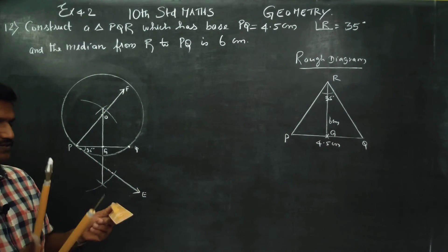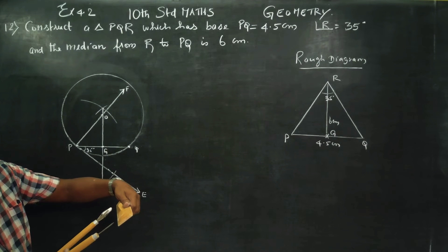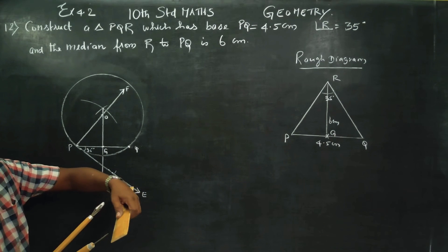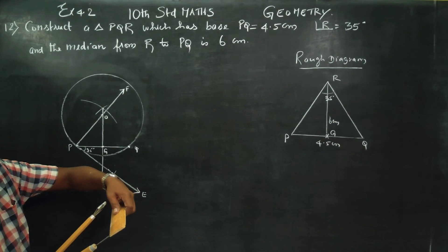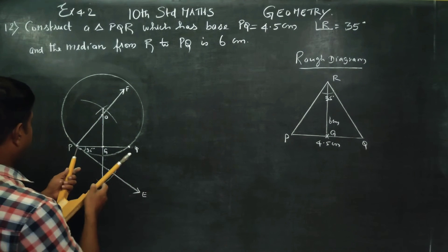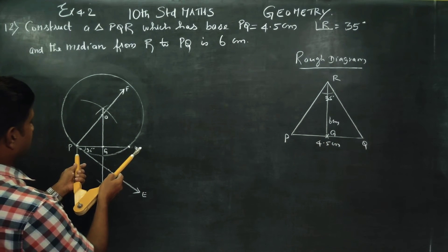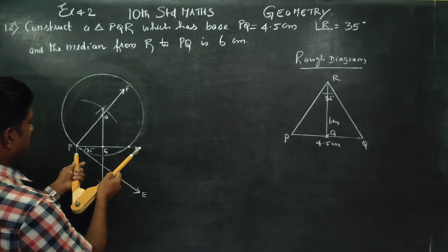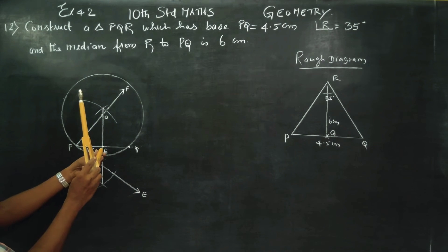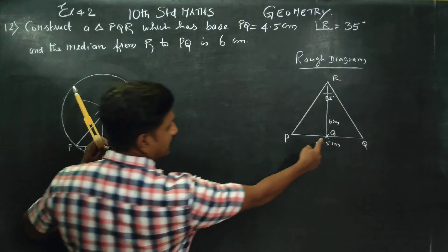Take 6 cm in your scale — measure exactly 6 cm. You have to draw an arc of 6 cm. This is my PQ of 4.5 cm, and the compass is set to 6 cm for the arc.